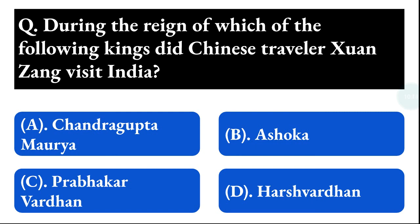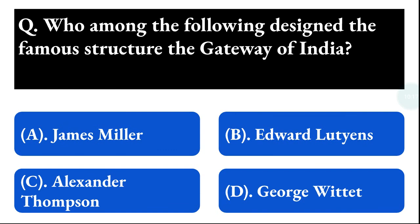Next question: who among the following designed the famous structure the Gateway of India? Option A: James Miller, option B: Edward Lutyens, option C: Alexander Thompson, option D: George Wittet. The correct answer is option D, that is George Wittet.